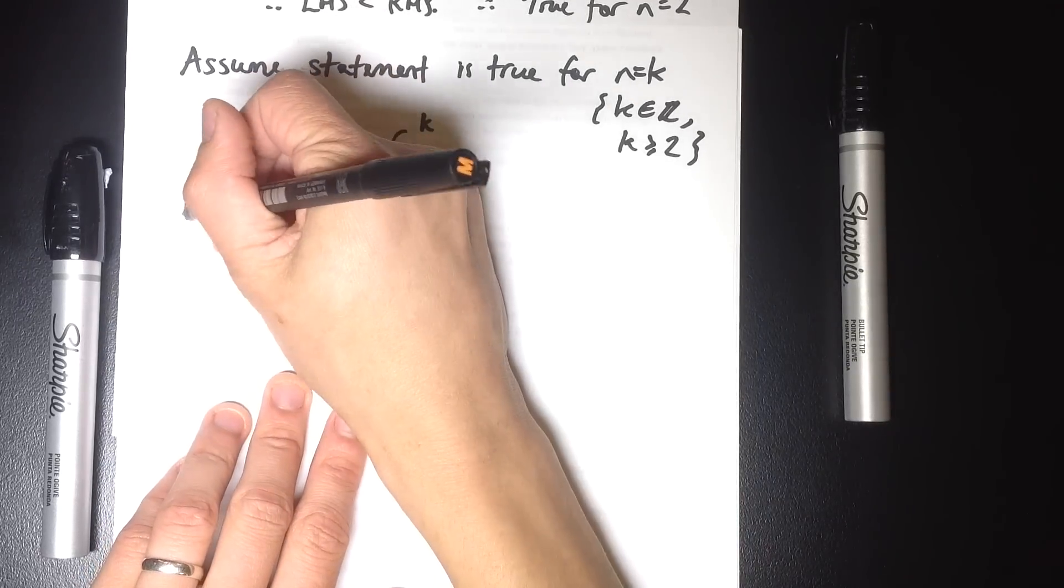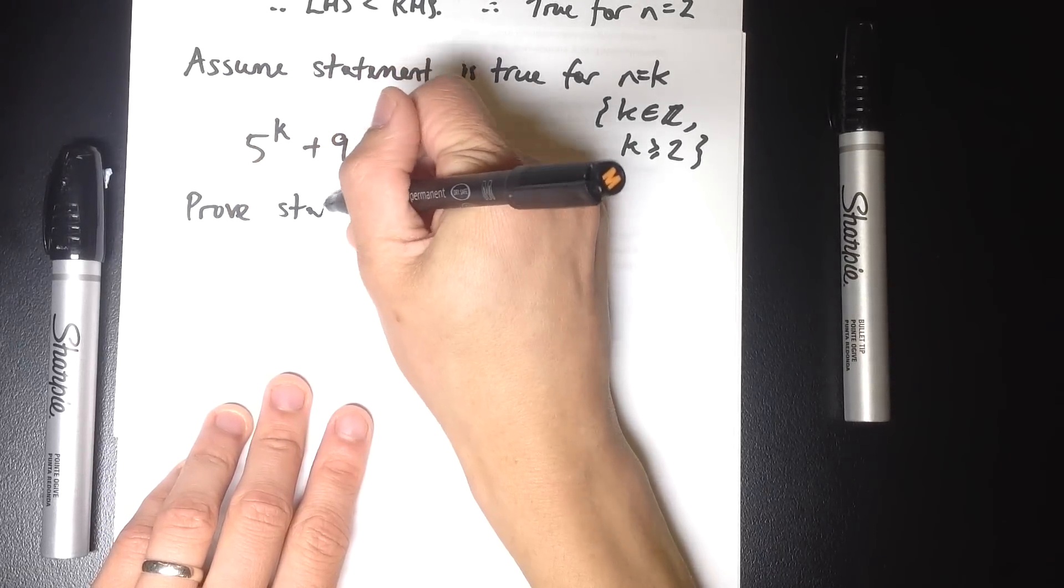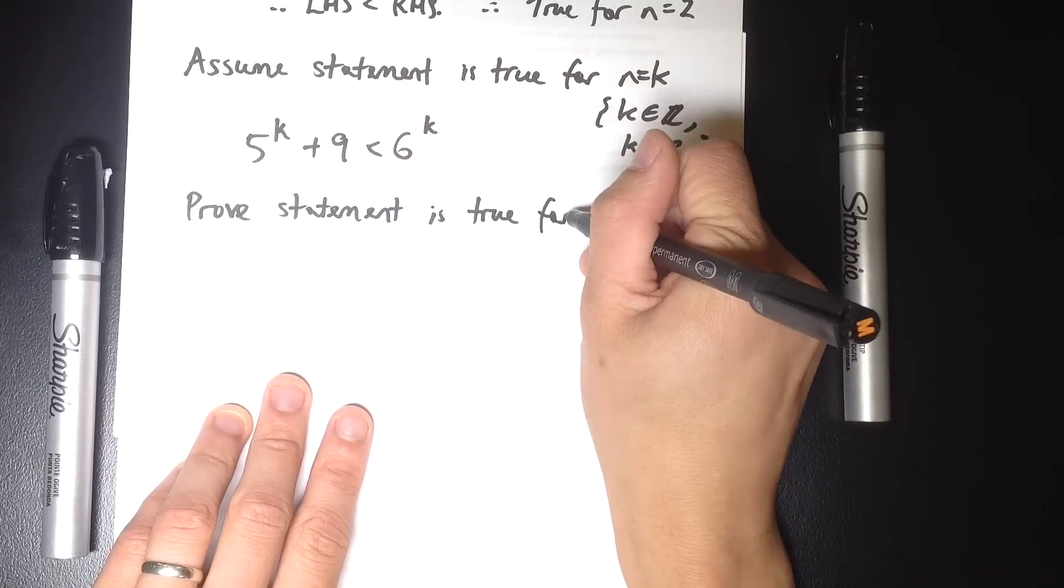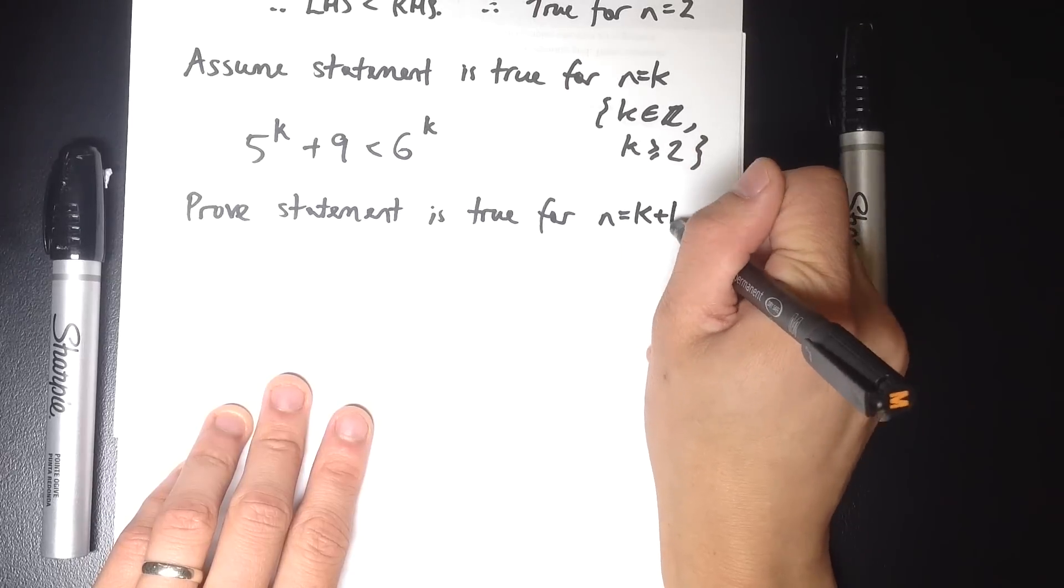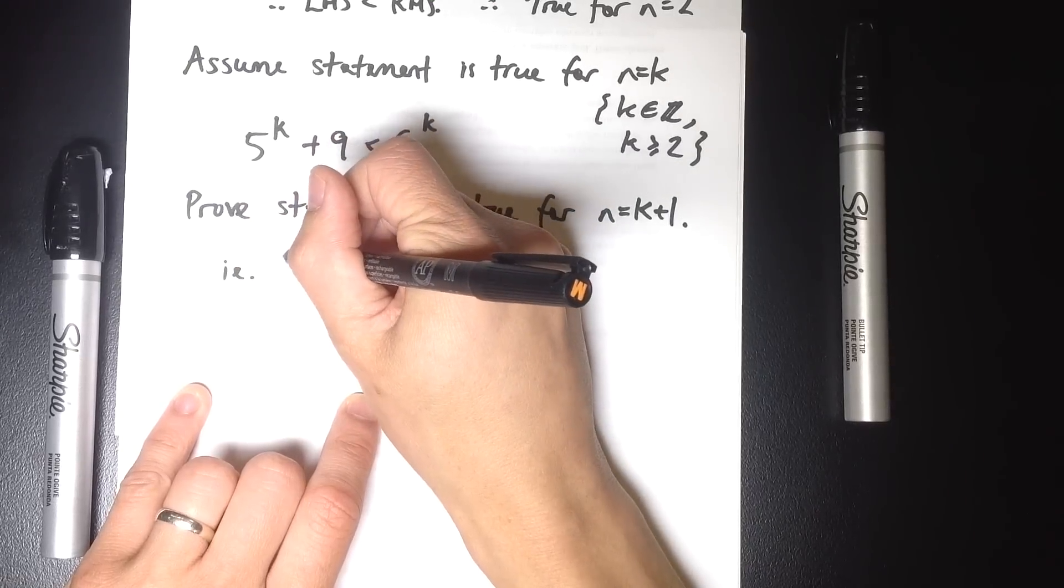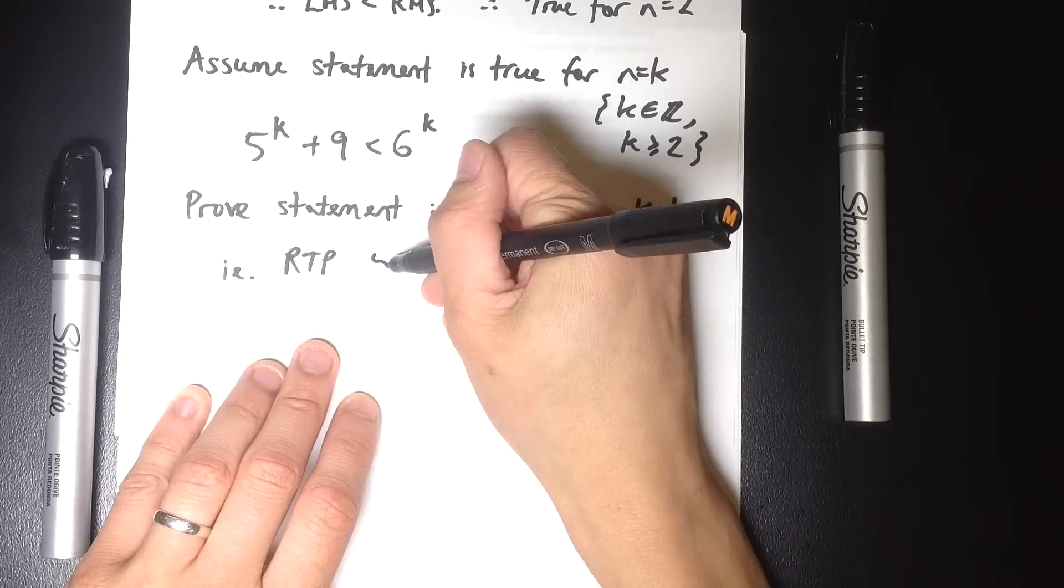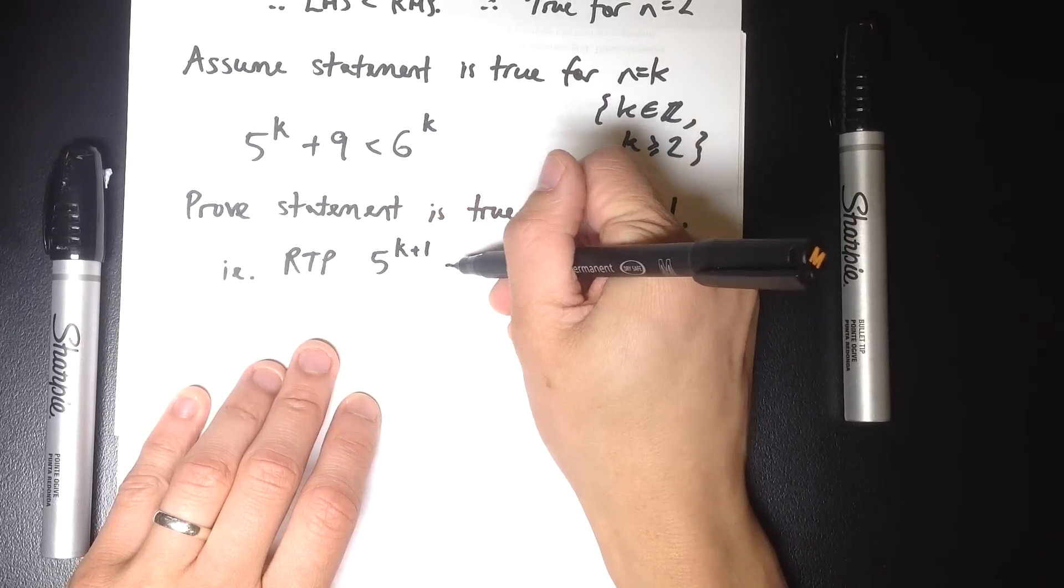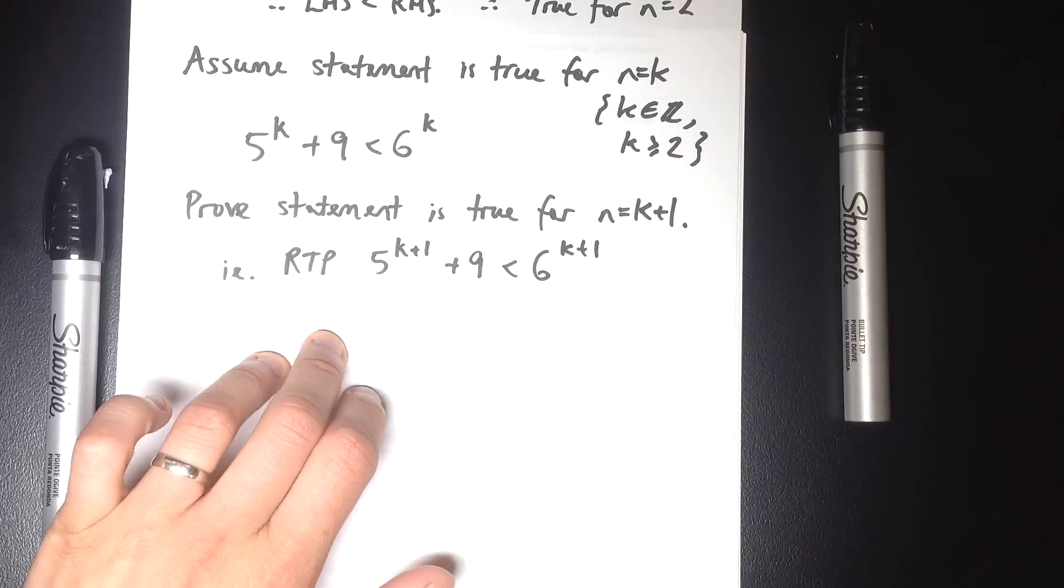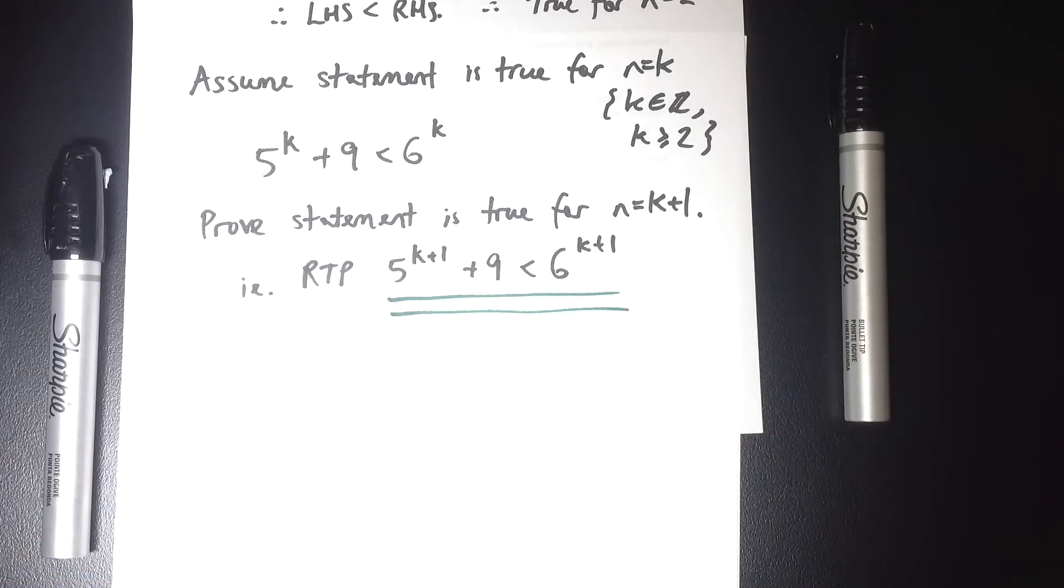So the third step is now, on this assumption, I want to prove that the statement is true for the next value along. This is where our work is going to begin. So I want to prove that it's true for n equals k plus 1. Now what does that look like? I need to prove that if I put in k plus 1 instead of k, I'll have 5 to the k plus 1 plus 9, and that's going to be less than 6 to the k plus 1 over there as well. So now, this is actually what I'm after, and this is where all of our algebra is going to come in. This is what I want to prove.